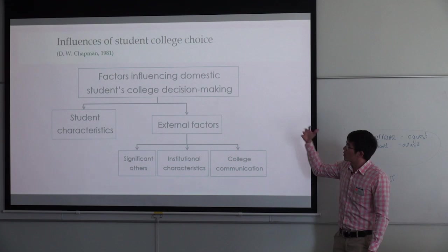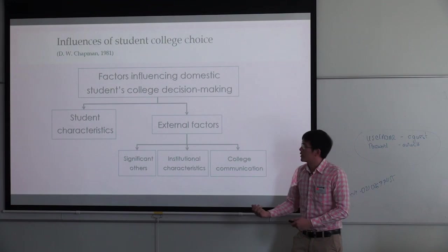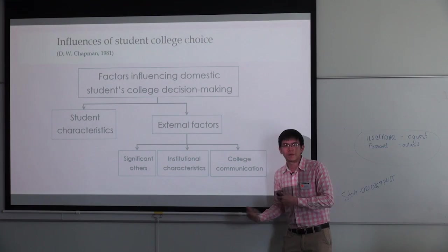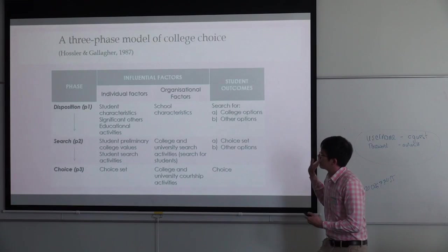I'll take you through some very key ones. This is the college choice factor research of Chapman. He identified factors that may influence the college choice of students in the US. These can be internal, based from the students themselves, or from outside — like from parents, friends, or from the school attracting them toward a certain university or institution.